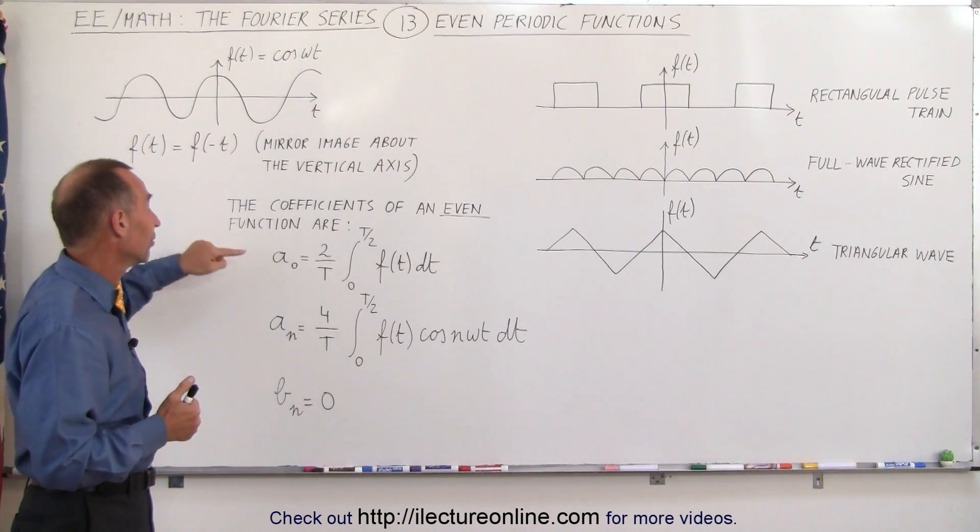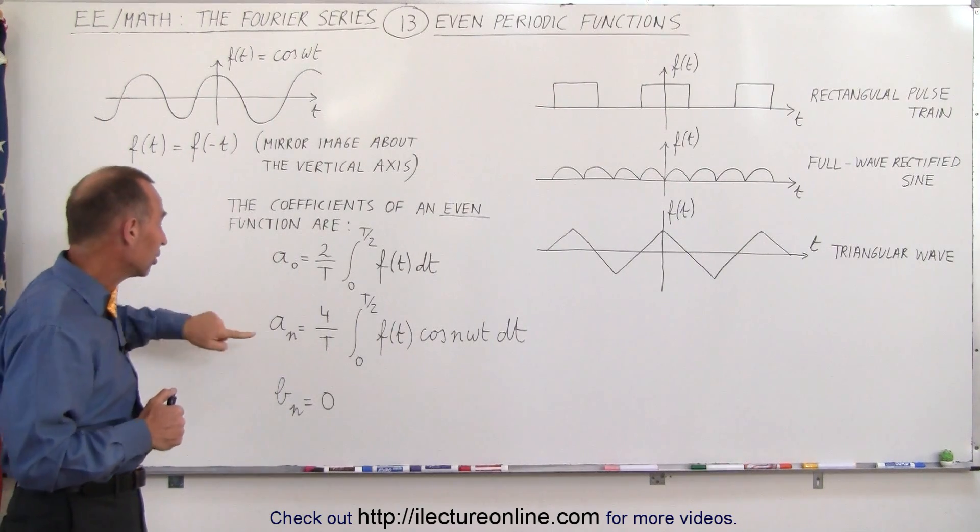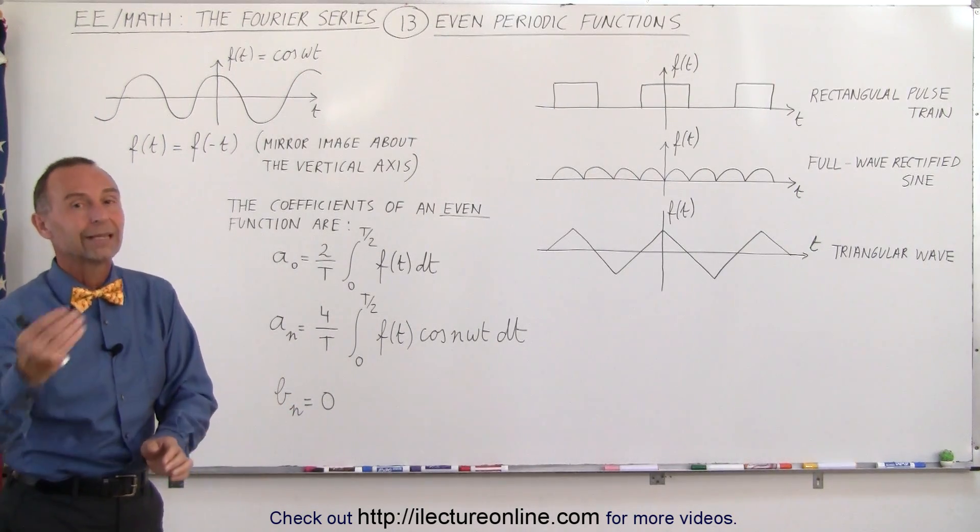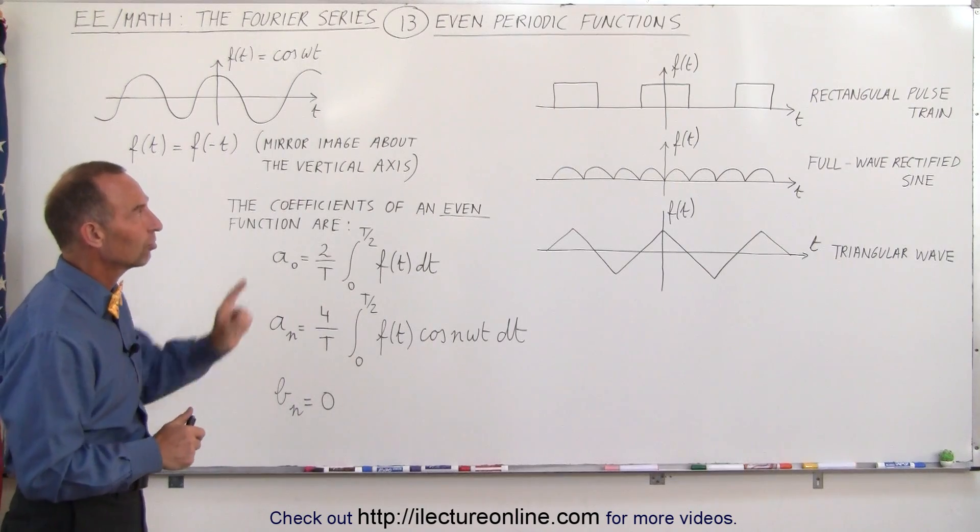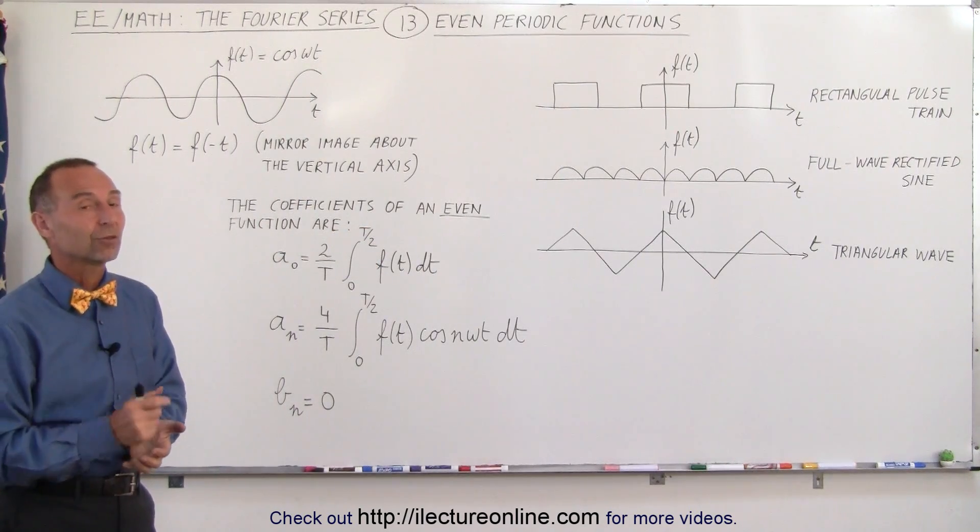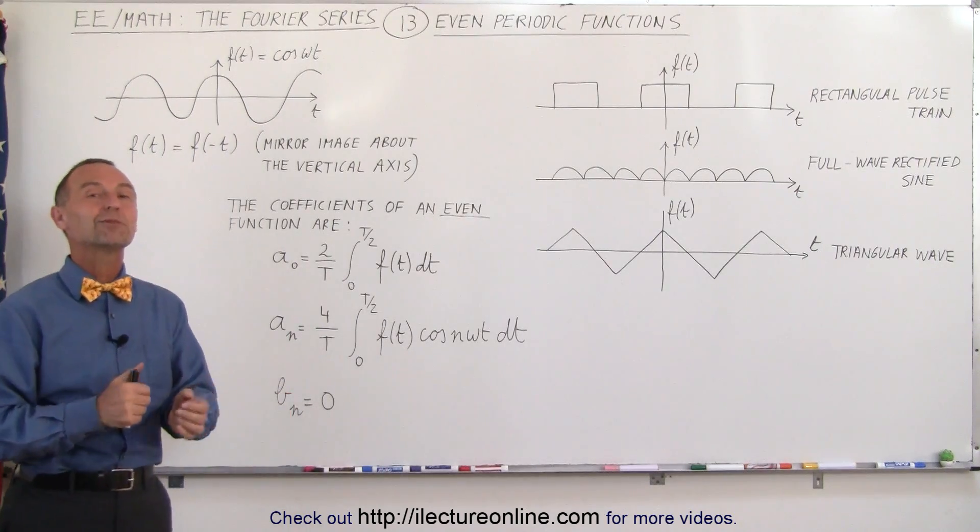You only have to find the aₙ coefficients. You don't even have to try the bₙ's because now you know for sure they're going to be equal to 0, as long as the function is an even periodic function. So remember that—it'll save you time in the future.